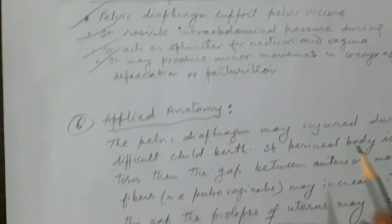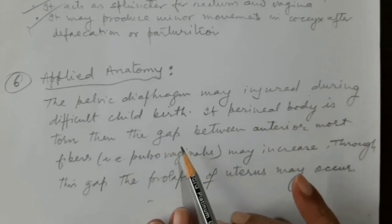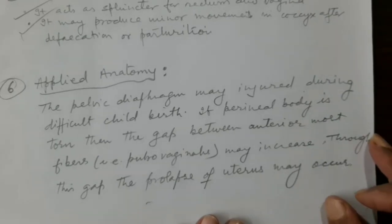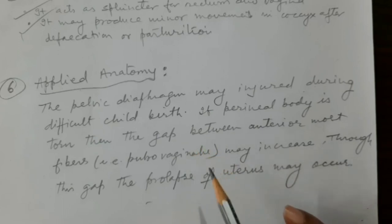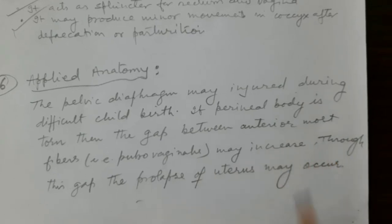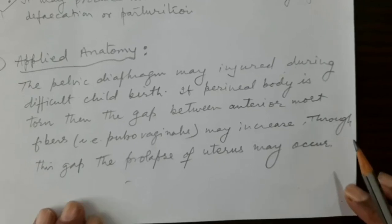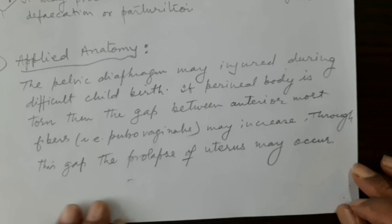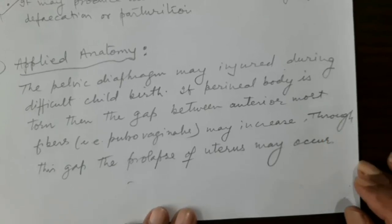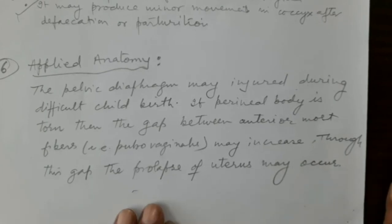Applied anatomy: the pelvic diaphragm may be injured during difficult childbirth through a narrow birth canal. The perineal body — which gives attachment to the anteromost fibers (pubovaginalis) of levator ani — may be torn. This increases the triangular gap through which the vagina passes. If this gap is not repaired after childbirth, the uterus may prolapse through this gap. Prolapse of the uterus following injury during childbirth is the key applied anatomy of the pelvic diaphragm.